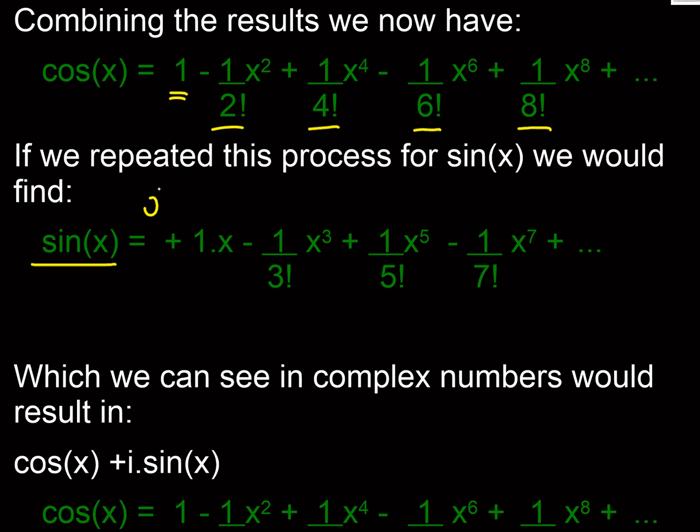So our first term here would be 1 because cos of 0 is 1, so our coefficient for our first x term here is going to be 1. And then when we differentiate again we get back to sin, so we end up with 0 for the x squared.